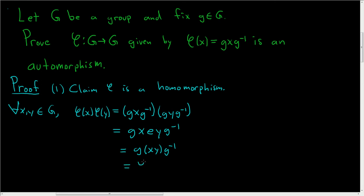And this is precisely equal to φ(xy). So we have that φ(x) times φ(y) is equal to φ(xy). So this shows that φ is a homomorphism. So that part is done.